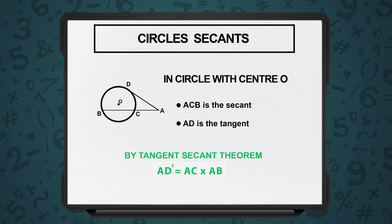The tangent-secant theorem says: from the same circle, from the same external point, if we have tangent AD and secant ACB, then AD squared is equal to AC times AB, where AB is the length of the entire secant and AC is the part of the secant outside the circle.